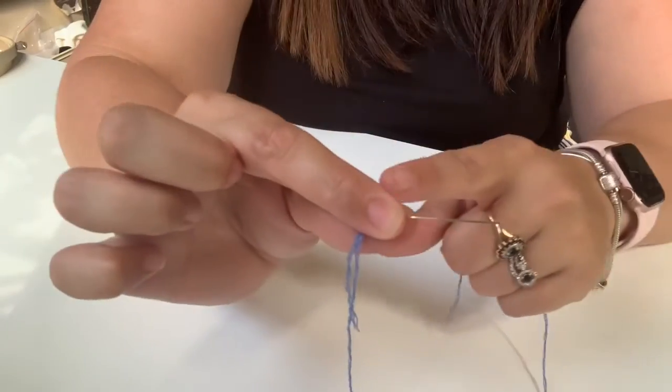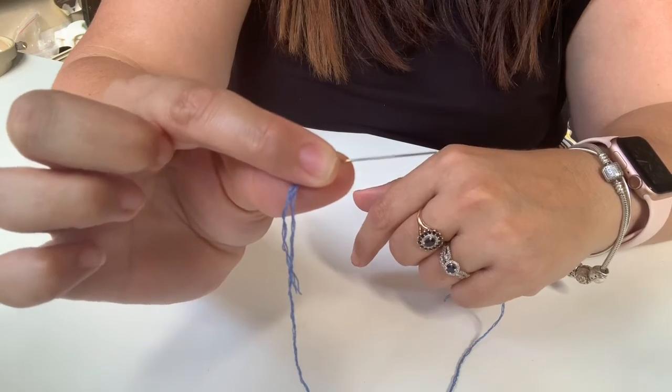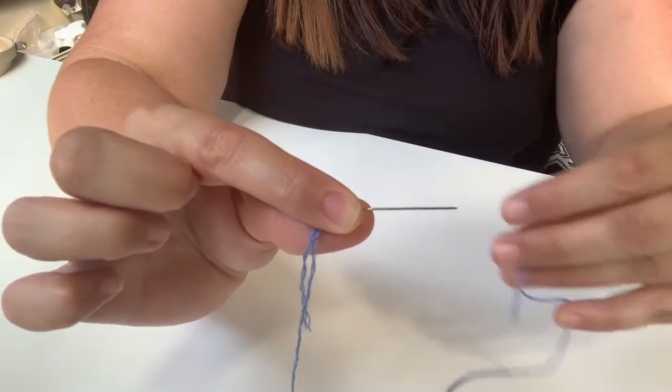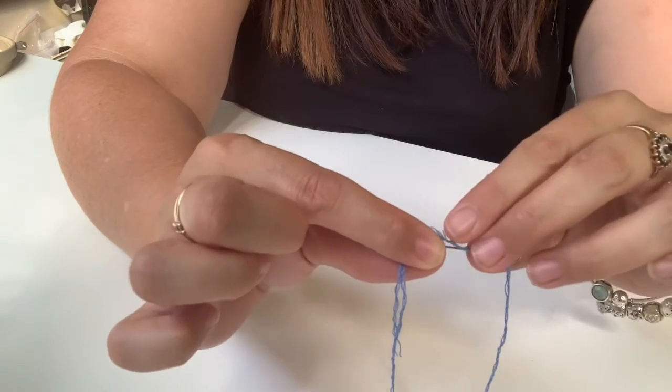We're going to take our thumb and our pointer finger and we're going to hold just on top of the eye of the needle, holding on to that needle. And then we're going to take our working end, lay it on top, pinch it over.